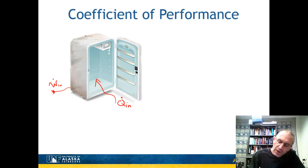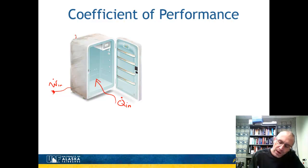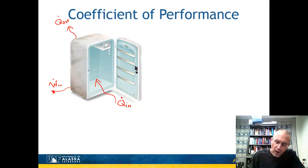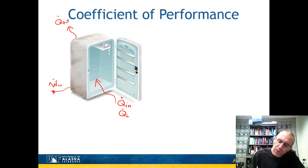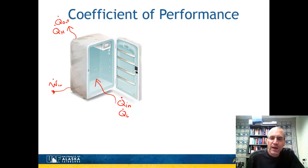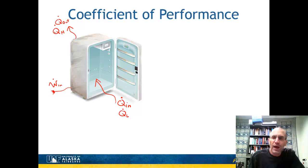On the back of the refrigerator, there's a series of coils. If you've ever put your hand on the back, you realize they're warm — there's heat coming off, and that would be a heat output. Instead of calling this Q_in and Q_out, since the refrigerated space is at a lower temperature, we call this Q_L for Q low, and since the coils are warmer, we call this Q_H. The input always occurs at the lower temperature, and the output occurs at the higher temperature.